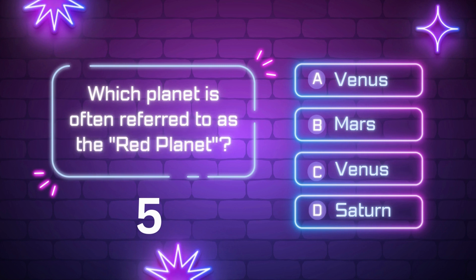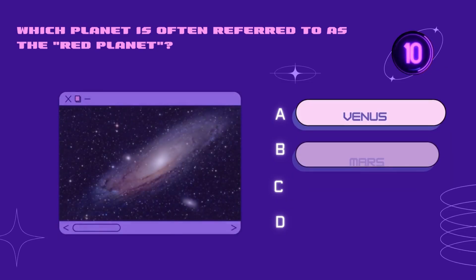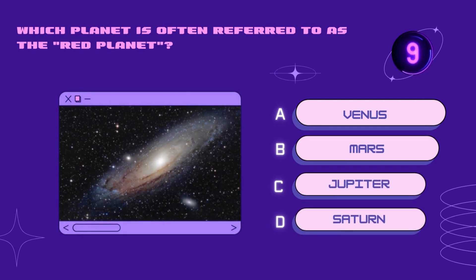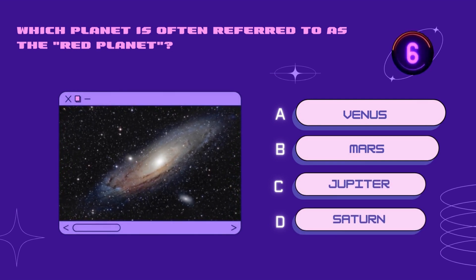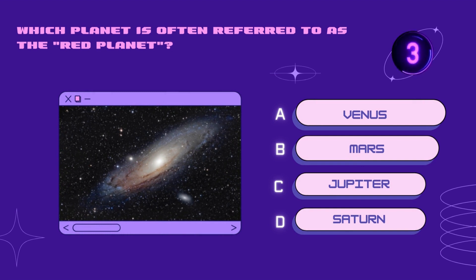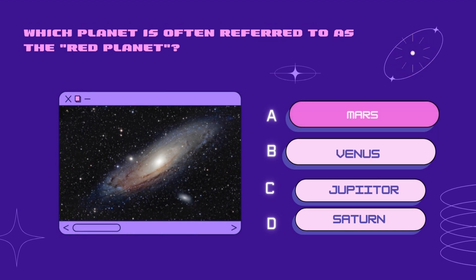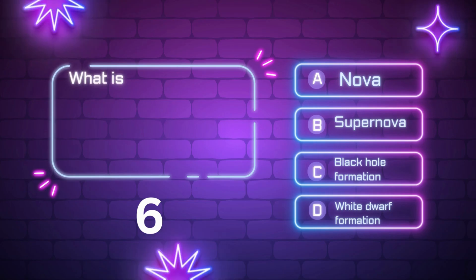Which planet is often referred to as the red planet? Venus, Mars, Venus, Saturn. Your time starts now. Right answer is Mars.